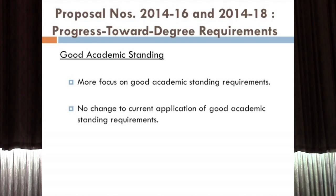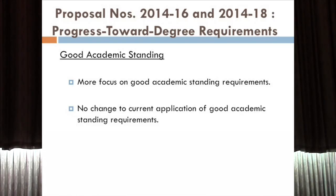Moving to progress toward degree. There were three progress toward degree proposals; two passed. One proposal contained the more palatable items everyone agreed with. There were two proposals pertaining to an annual credit hour requirement — the stricter requirement was defeated and the less strict option was adopted. We'll look at them together now, since we know what we're dealing with.